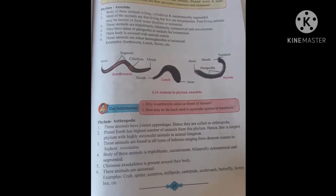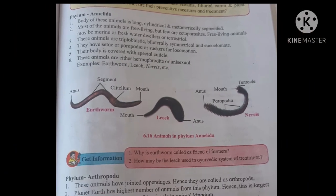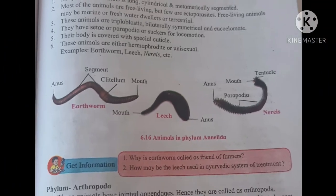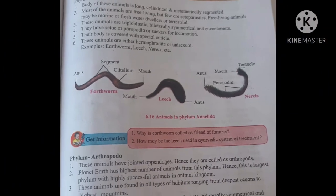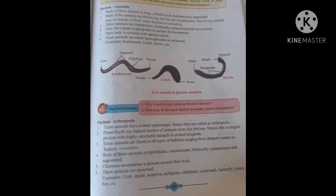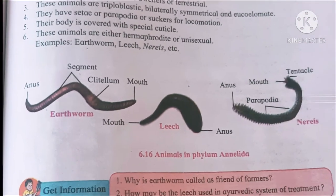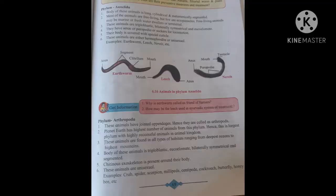Characteristics of Phylum Annelida. First, the body of these animals is long, cylindrical and metamerically segmented. Second, most of the animals are free-living, but few are ectoparasites. Free-living animals may be marine or freshwater. These are triploblastic and bilaterally symmetrical.